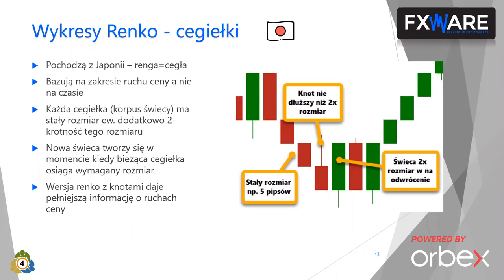Nowa świeca tworzy się w momencie, kiedy bieżąca cegiełka osiąga wymagany rozmiar. Przykładowo cena leci w dół i osiągnęła 5 pipsów, bo to jest rozmiar tego wykresu RENKO - ta świeca się kończy i powstaje kolejna. Świeca odwrócenia musi mieć w przeciwnym kierunku rozmiar razy 2. Powstają też knoty, gdy cena cofa, ale knot nie może być dłuższy niż dwukrotny rozmiar - bo gdyby miał dwukrotny rozmiar, powstałaby świeca odwrócenia.